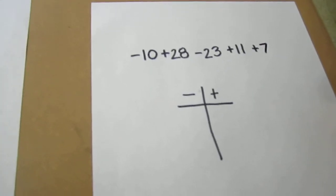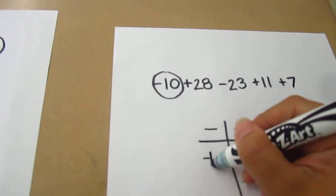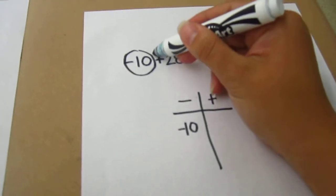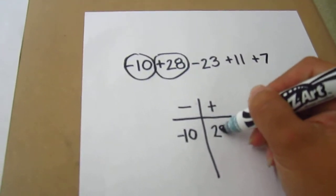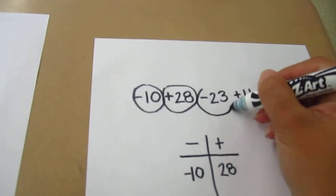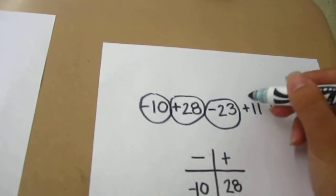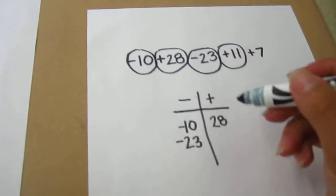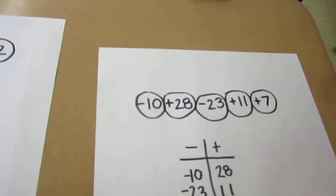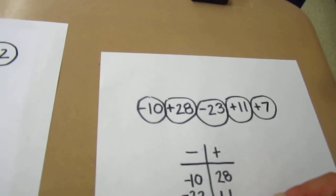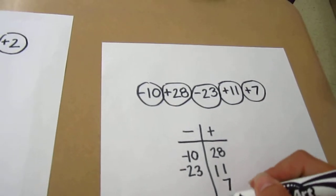We're going to identify each term again. My first term is negative 10, so I place that on the negative side. My second term is positive 28, on the positive side. My third term is negative 23, on the negative side. My fourth term is positive 11, on the positive side. And my last term is positive 7, also on the positive side. Remembering to line up my place value so all my ones place digits are lined up.